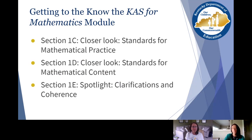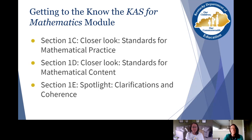Just like with the Getting to Know the CAS for reading and writing, we want to highlight some sections within the CAS for mathematics. There are many sections within this, but those that we would like to highlight — and we would really recommend spending time on — are: Section 1C, which takes a closer look at the standards for mathematical practice; Section 1D, which looks at the standards for mathematical content; and then Section 1E, which highlights the clarifications and coherence.